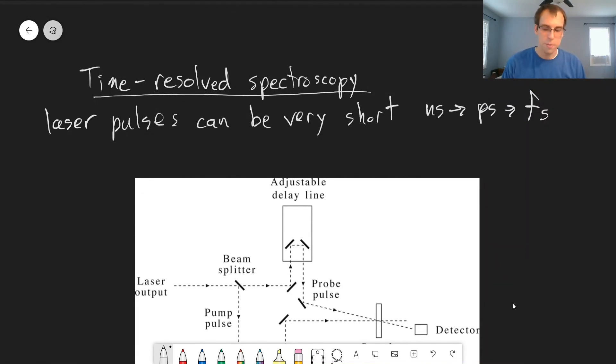Depending on the specifics of the situation, we can generate these very short pulses of light and then measure what happens after molecules absorb that light. This can measure dynamic processes on those time scales, on nanosecond or picosecond time scales, or even femtoseconds.